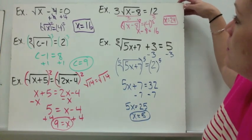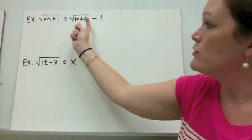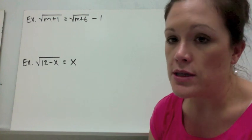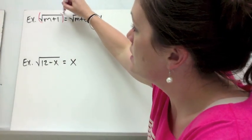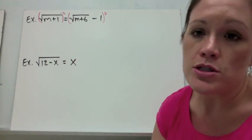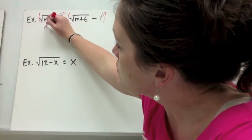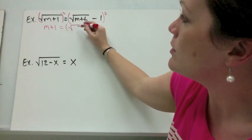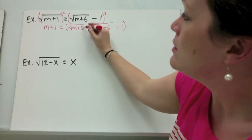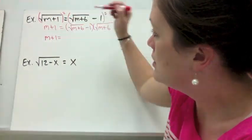Now let's look at two more examples. In this next one, the radical is not completely by itself, so squaring both sides will take more work. Go ahead and square both sides — on the left, m + 1 comes out evenly. But on the right, we have a binomial, so we need to use FOIL or the box method to multiply it. I'll use the FOIL method, bringing down m + 1, and multiply the square root of (m + 6) times itself.